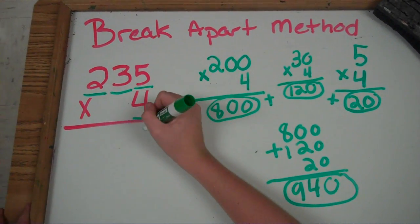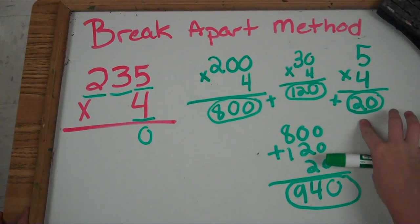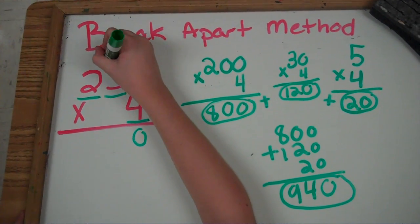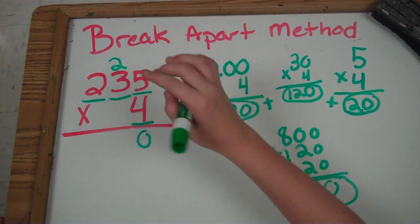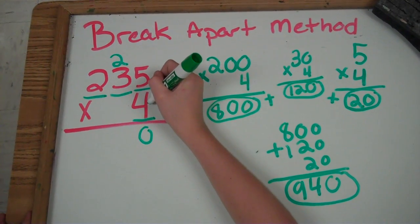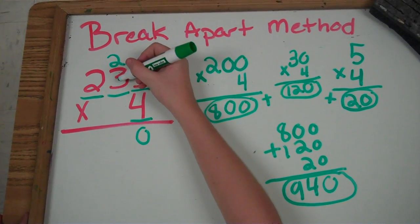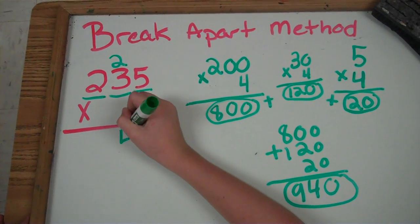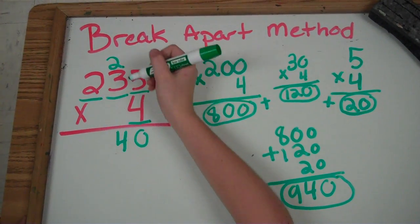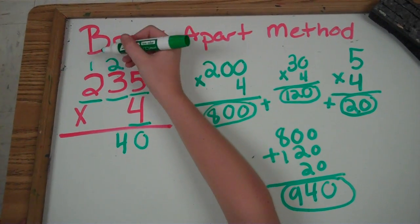4 times 5 is 20. So bring down your 0 and regroup your 2 into the next column. Now 4 times 3 is 12, plus the 2 that you regrouped is 14. Bring down your 4 and regroup the 1 into the next column.